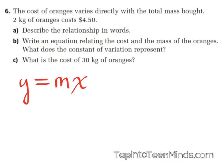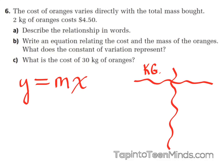In any scenario where you don't pay just to show up, you know it's going to be a direct variation. If I go to the car wash and order zero car washes, how much does it cost? Absolutely nothing — so that's a direct variation. Now, which variable is the independent and which is the dependent? The independent would be the kilograms of oranges and the dependent would be the cost, because as you buy more oranges, the cost is going to be higher.